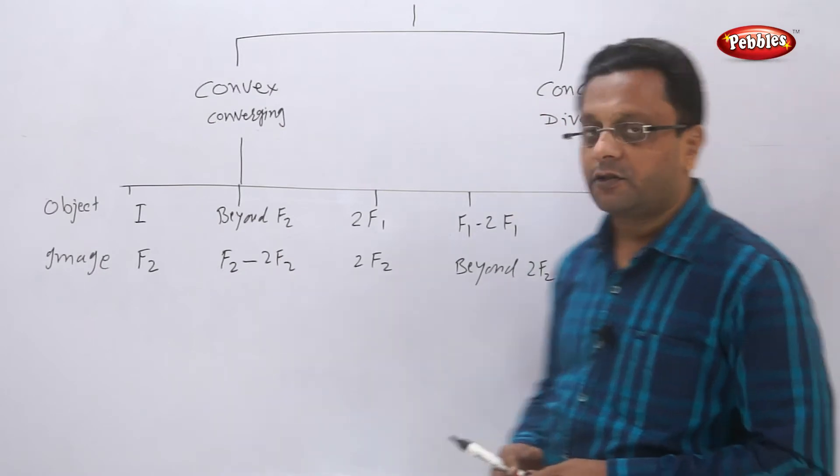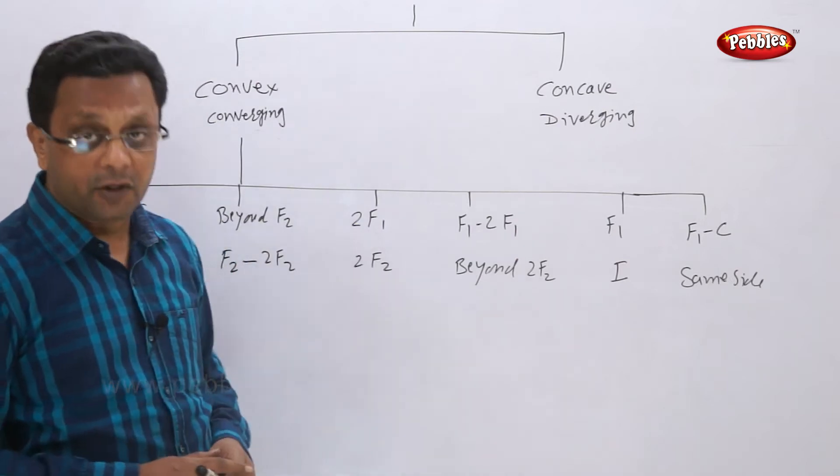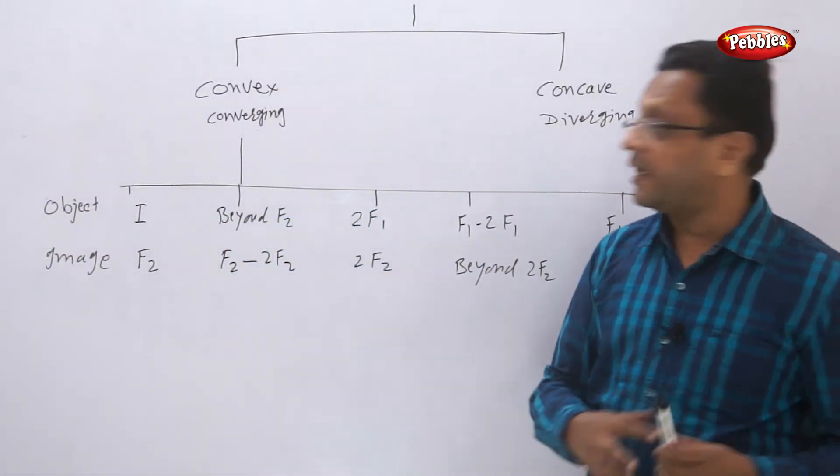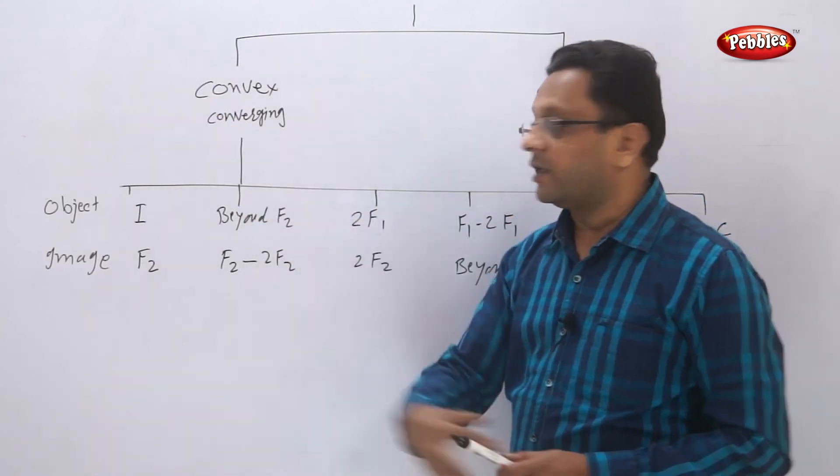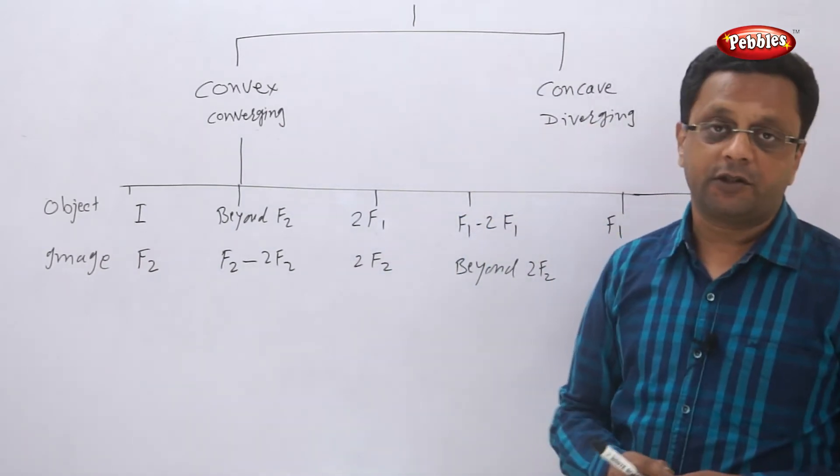You know that convex lens is converging type and concave lenses are diverging type. We have seen the ray diagrams or line diagrams for the convex lens and the object and image positions.